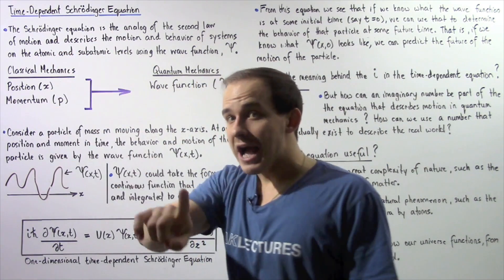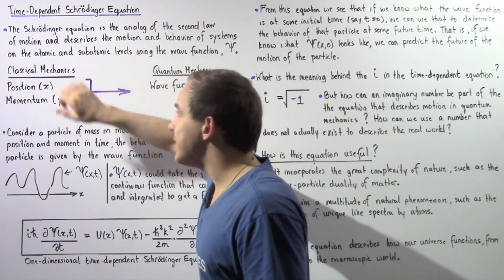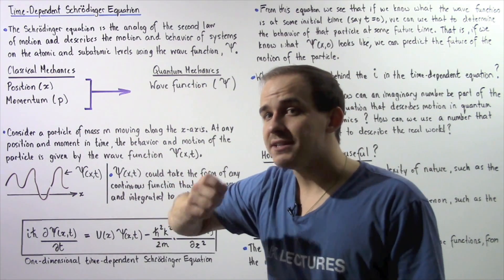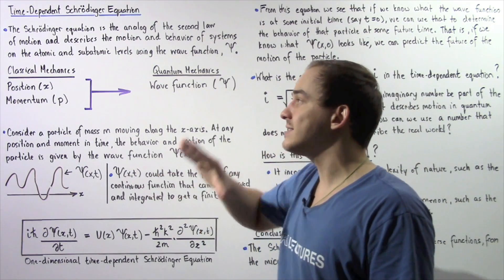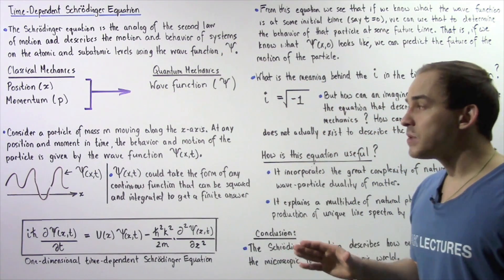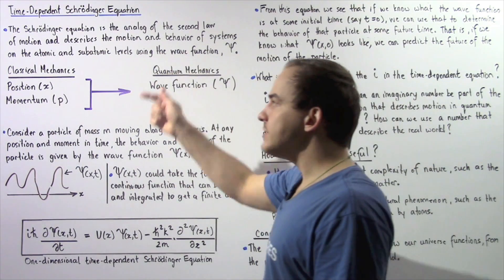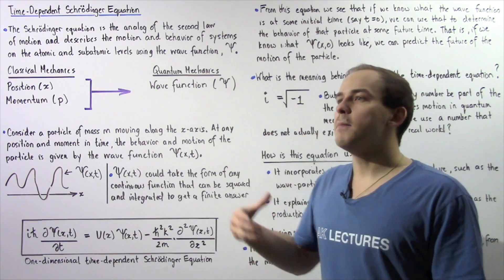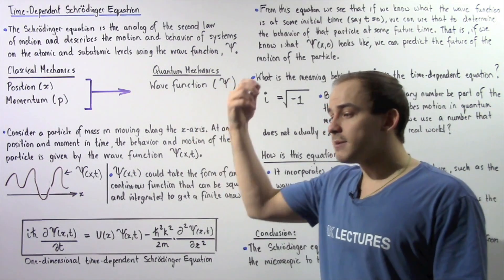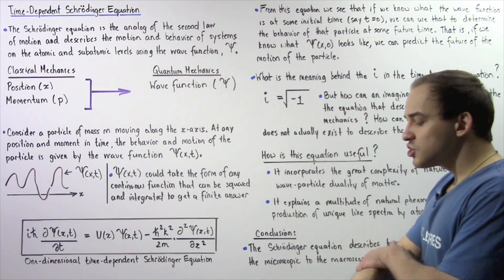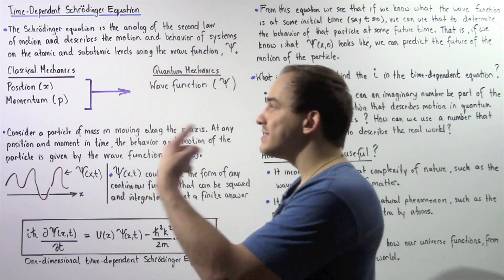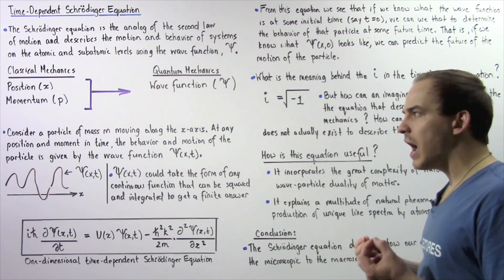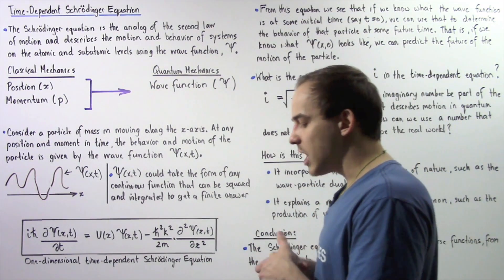So if we know precisely what the position is of our object along the x-axis and we know what the momentum is of that object at the same instant in time, then we can use these two quantities to basically determine what the motion of that object will be at some future moment in time. So in classical mechanics, position and momentum are needed to sufficiently describe the motion of our object.